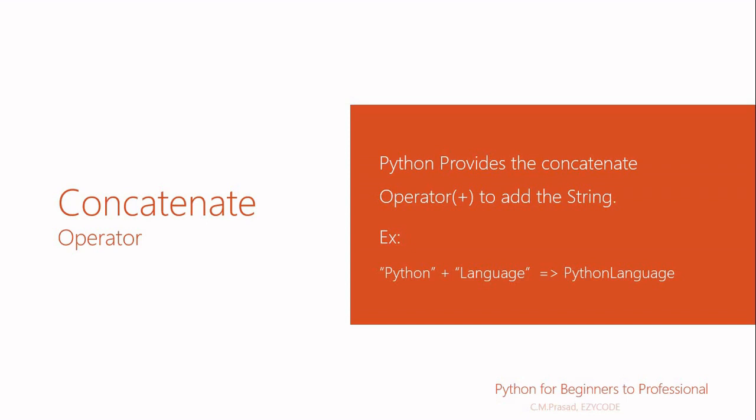The plus sign is used for arithmetic operations as well as the concatenation operation. If we use numeric values with the plus sign, then an arithmetic operation is performed. If we use string values, then the concatenation operation will be performed.